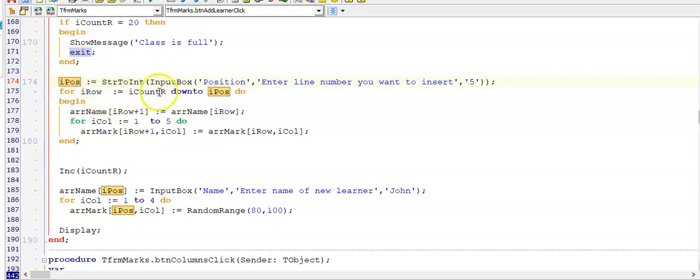So I'm looping with my row counter from the row counter down to iPos to make a space for this learner. Moving them all up one as well as their marks. Now I have one extra learner. So I'm going to increment my counter so that it's one higher. And in here I'm going to place now the person's name as per the user's input at the position they wanted. And I'm also allocating marks for them.